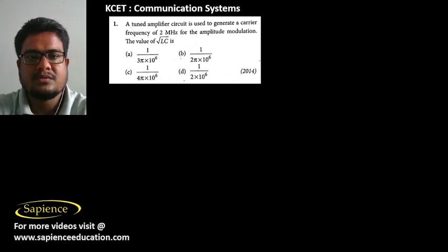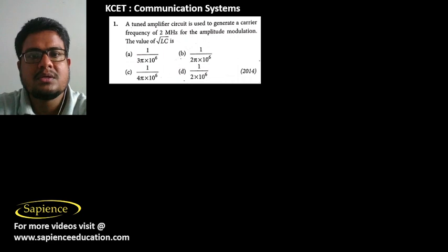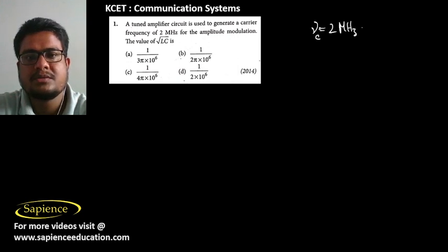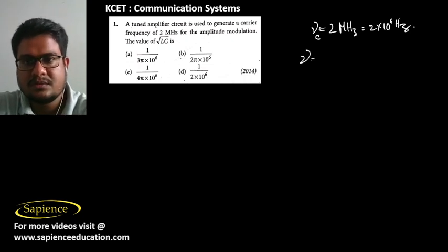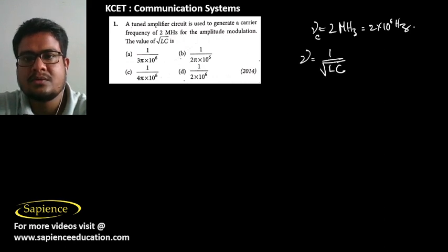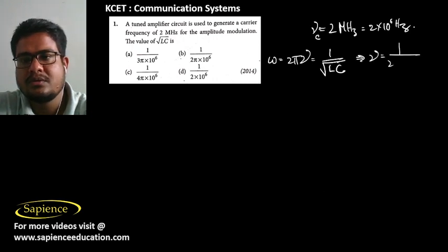In the first question, a tuned amplifier circuit is used to generate a carrier frequency of 2 megahertz, that is 2 × 10⁶ Hz, for amplitude modulation. We need to find the value of root LC. We know that the frequency for LC oscillations is ν = 1 / (2π√LC), so the angular frequency ω = 1/√LC.